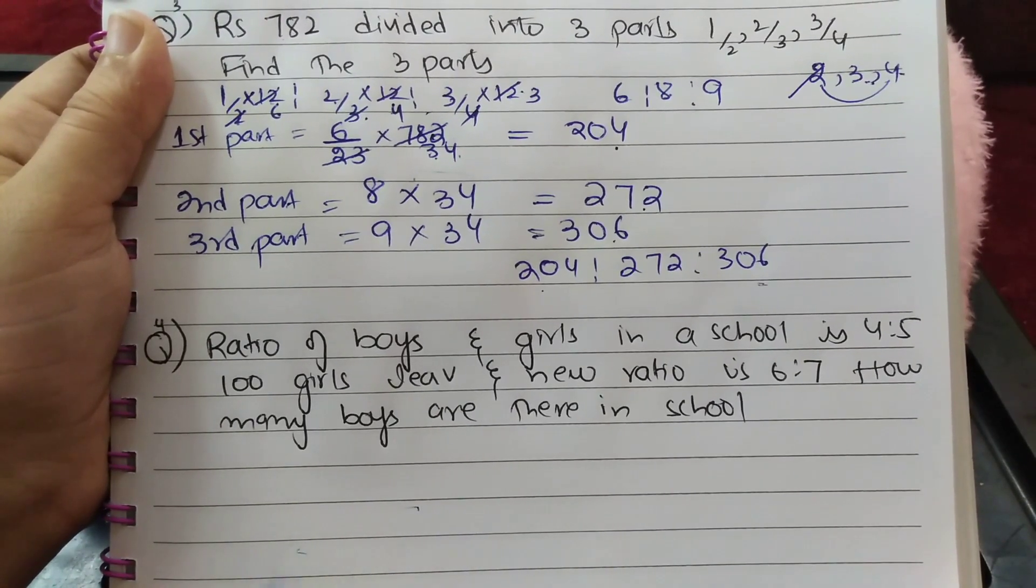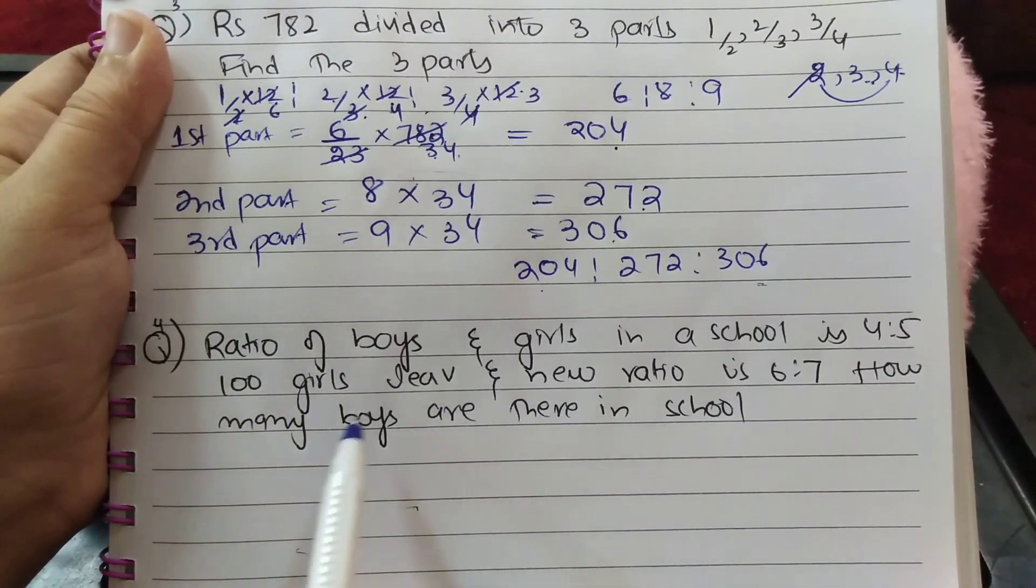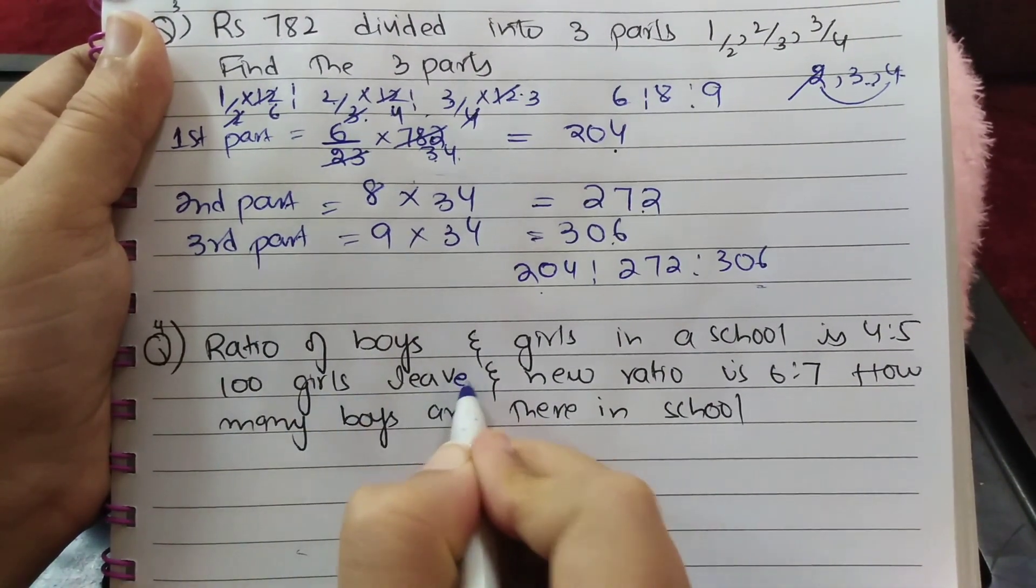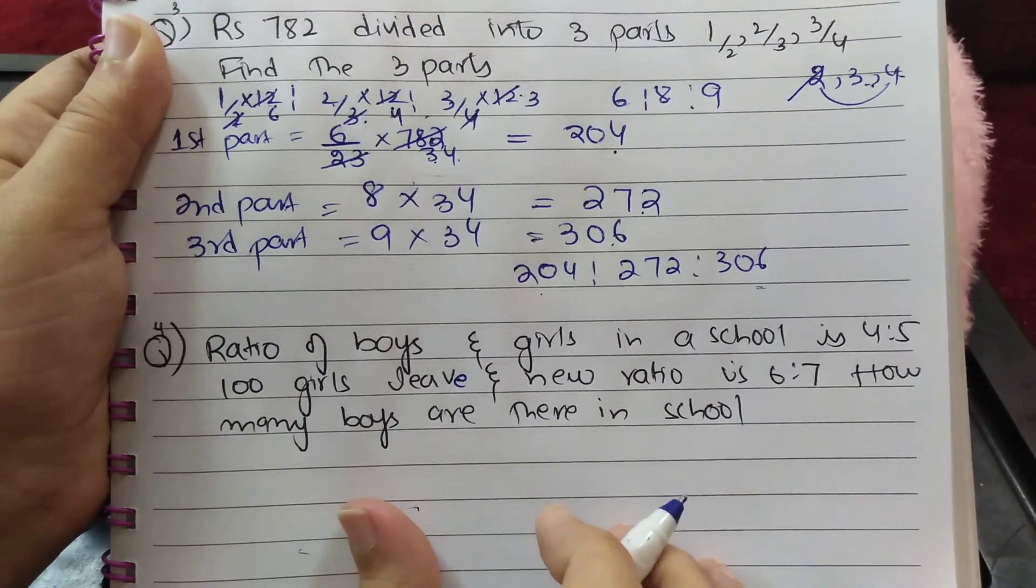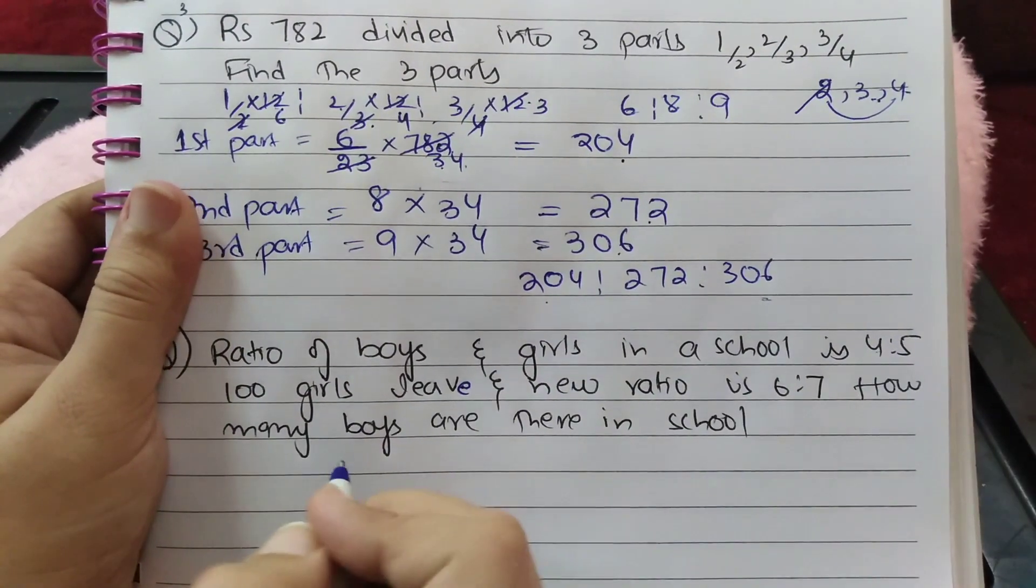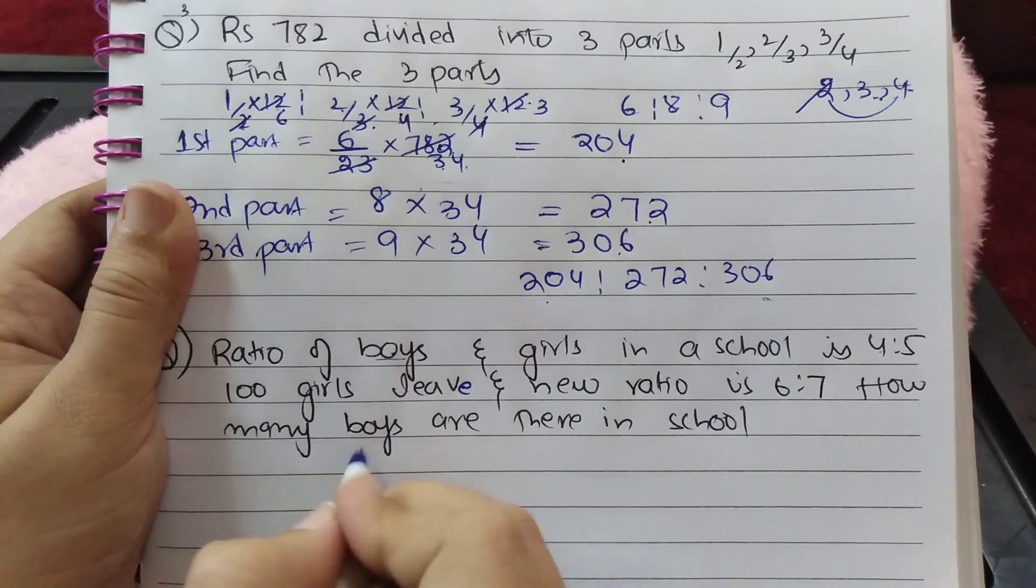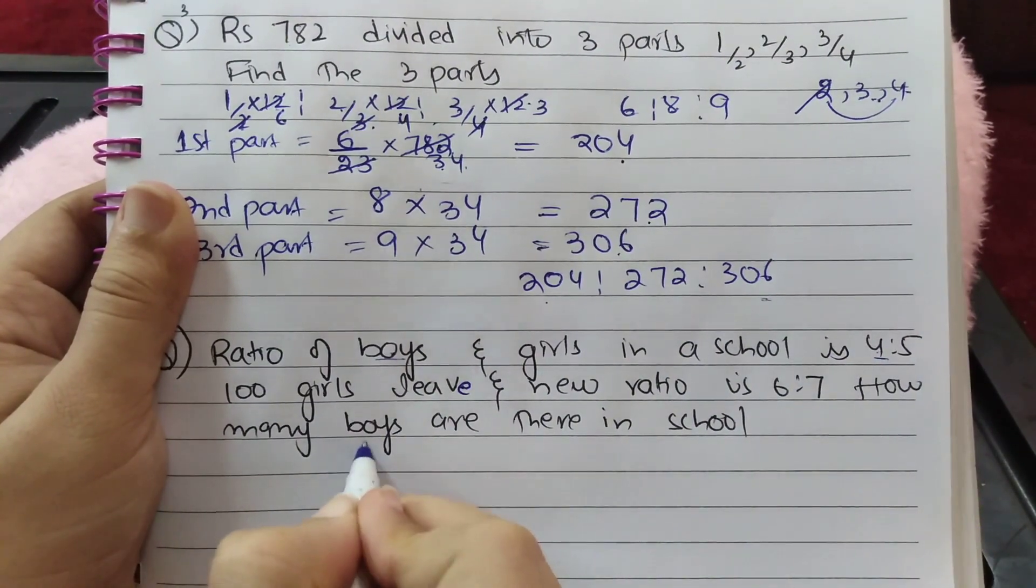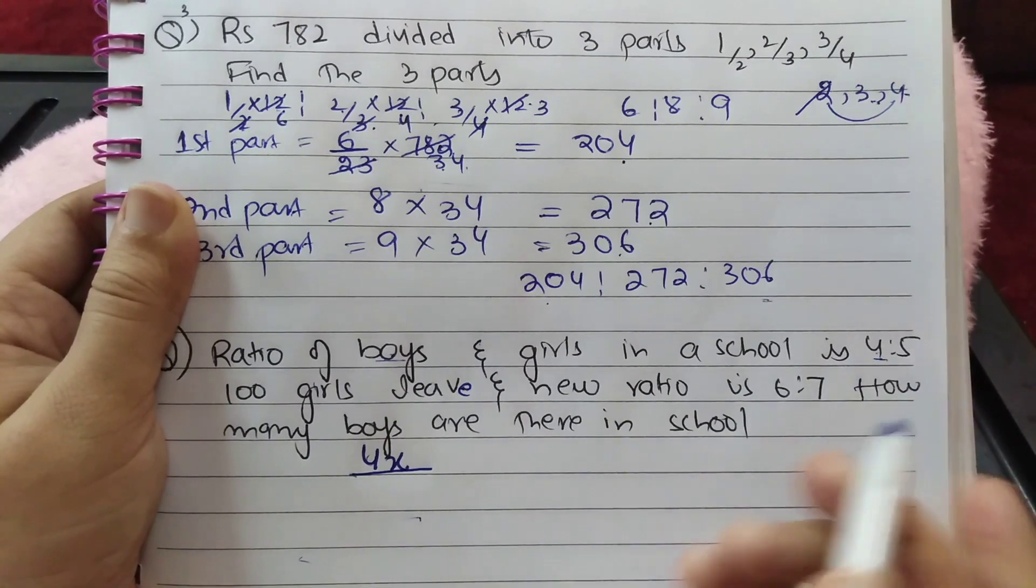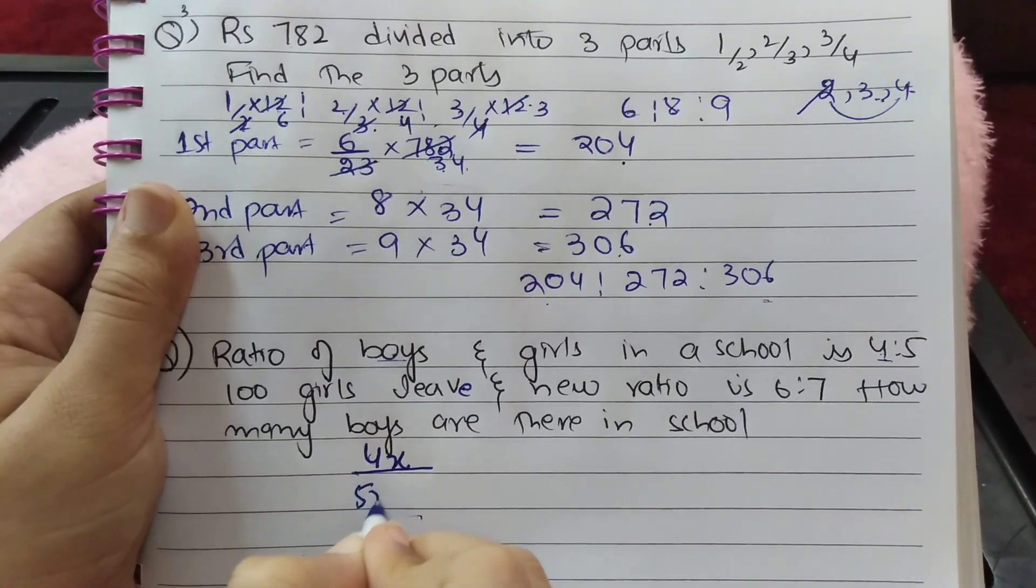Question number 4: Ratio of boys and girls in a school is 4:5. 100 girls leave and the new ratio is 6:7. How many boys are there in the school? Use a variable - number of boys is 4x and number of girls is 5x.